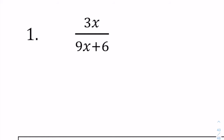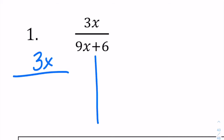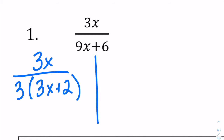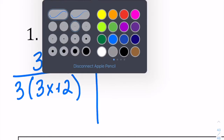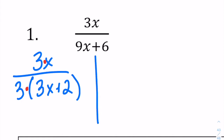3x over the binomial 9x plus 6. First approach: we look at any places where we can factor. The numerator can't be factored further — it is simply 3x. The denominator has a greatest common factor of 3, giving us 3 times (3x plus 2). This gives us multiplication here and multiplication here. Because we've got factors that are multiplied, we can cancel them out from the top and the bottom. You can't cancel them out when they're added or subtracted.